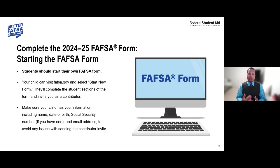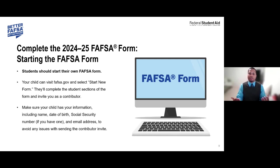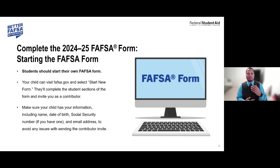When it comes to starting the FAFSA form, there are two ways: either the student or the parent can start it. For the 2024-25 FAFSA, both parties can start the form on behalf of one another. It's always good practice to have the student start the FAFSA form and make sure their name matches exactly as it appears with the Social Security Administration — avoiding nicknames, spaces, dots, or anything not on the Social Security card.